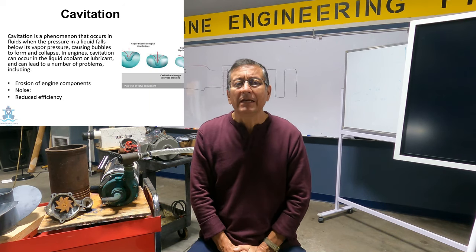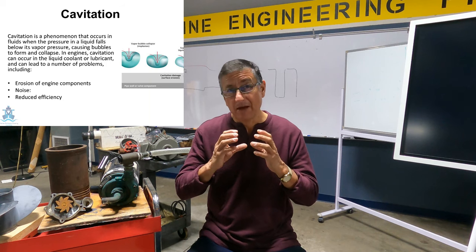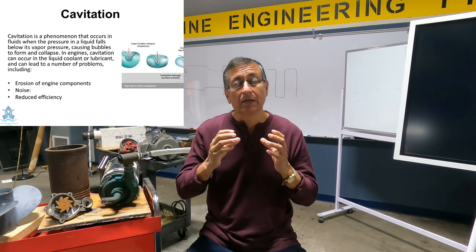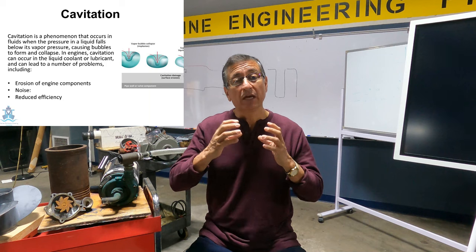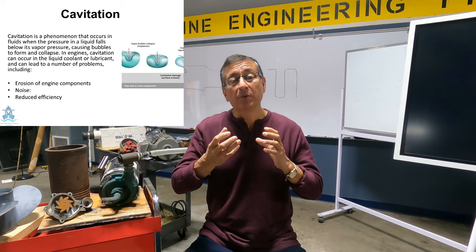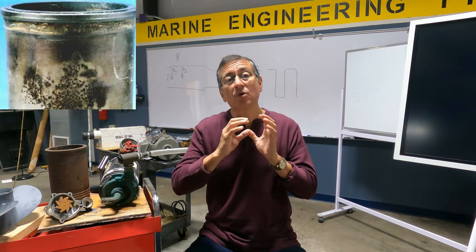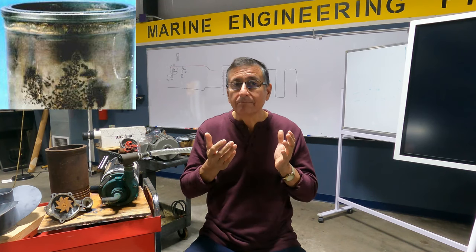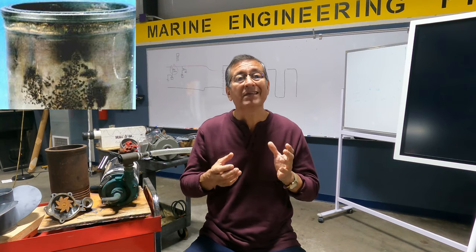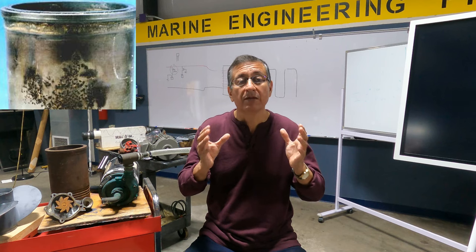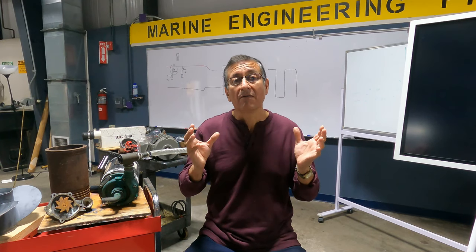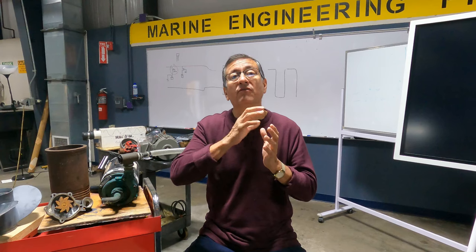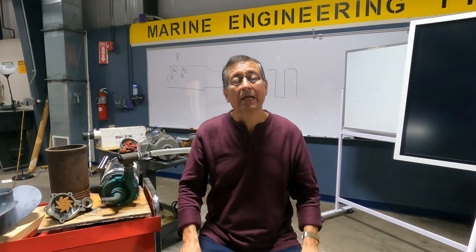Cavitation is basically the formation of vapor bubbles in a fluid. With the temperature the bubbles increase, the bubbles explode and erode the metal, the surface of the metal. Cavitation is the erosion of any metal surface because vapor bubbles explode over the surface and erode the metal.